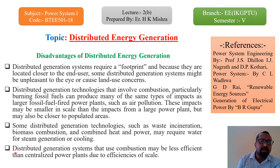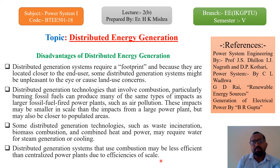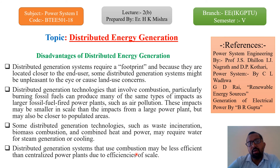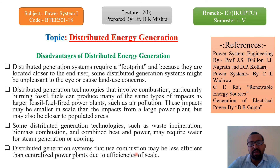Another disadvantage is that distributed generation systems that use combustion may be less efficient than centralized power plants due to economies of scale. When we discuss the efficiency of solar, wind, or other distributed generation systems, the overall generation efficiency is very low as compared to a normal large-scale generating plant.